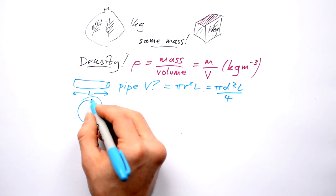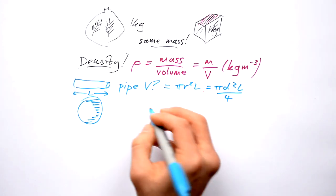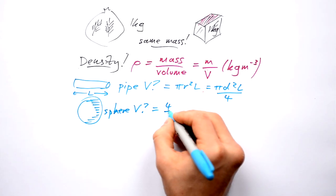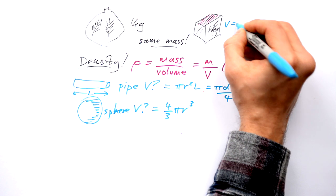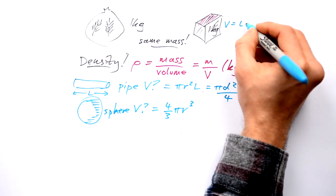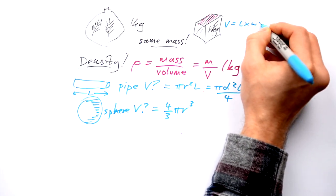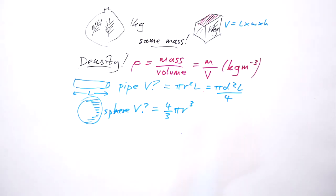What about if it's a sphere? A ball? That equals four thirds pi r cubed. And for a block it's going to be length times width times height. And that's for a cuboid. That's fairly simple isn't it?